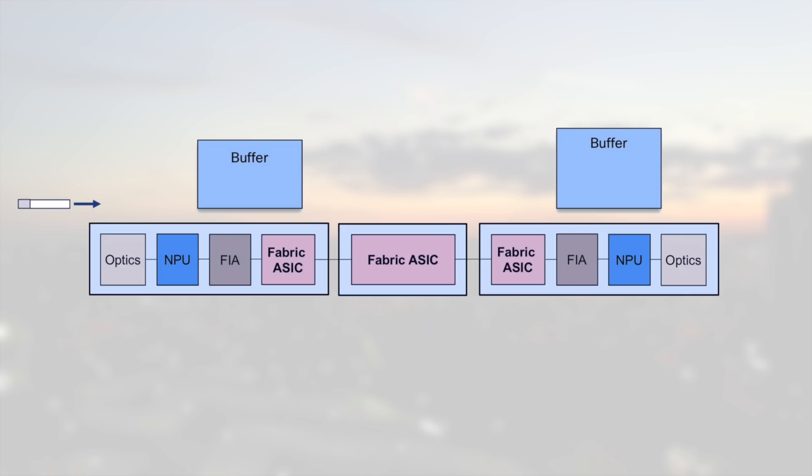On the NCS5500, we just have one single lookup happening in the ingress NPU. The idea is to cut in half the resources and memory accesses. The benefits are a reduced latency, a lower power consumption, and eventually a lower OPEX and CAPEX.